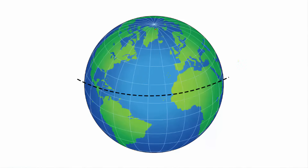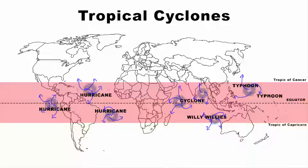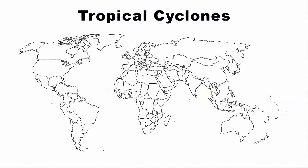In this video, we are going to learn about tropical cyclones. The first thing you need to understand is that tropical cyclones originate over oceans in tropical areas and coastal regions.